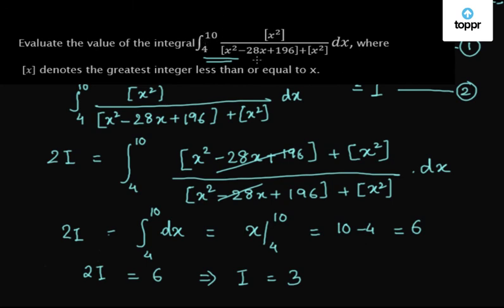So the value of twice the integral is 6, meaning I equals 3. The integral of this complex function from 4 to 10 of greatest integer of x squared upon greatest integer of x squared minus 28x plus 196 plus greatest integer of x squared, dx, comes out to be 3.